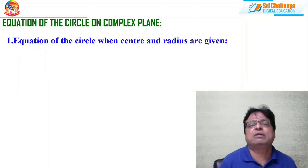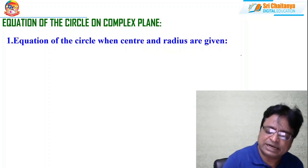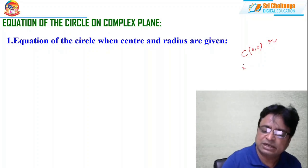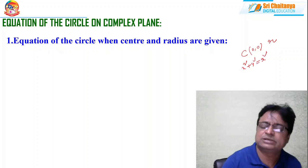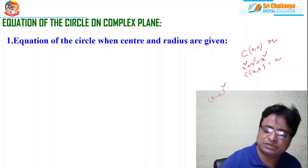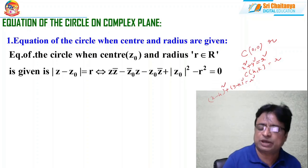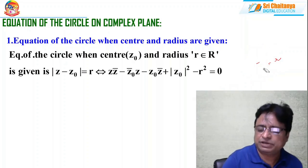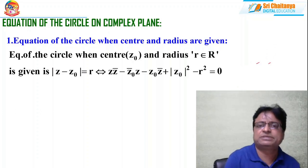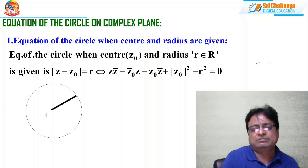The equation of the circle in the complex plane: if center is at the origin and radius is r, the equation is x² + y² = r². If center is at (h, k) and radius r, the equation is (x − h)² + (y − k)² = r². In complex numbers, the equation of a circle with center z₀ and radius r is |z − z₀| = r.